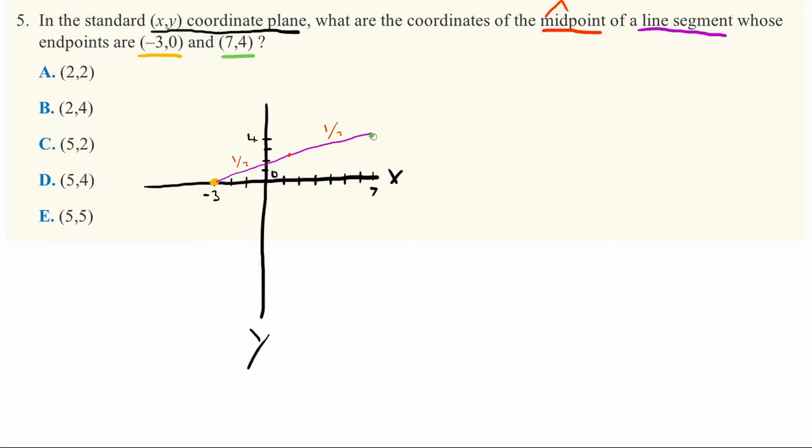The trick to solving a problem like this is to realize that the midpoint overall is also the midpoint on the x-axis and the midpoint on the y-axis. That is, the distance between -3 and the midpoint here is half of the total distance, and the distance between this and 7 is a half. And the same thing on the y-axis.